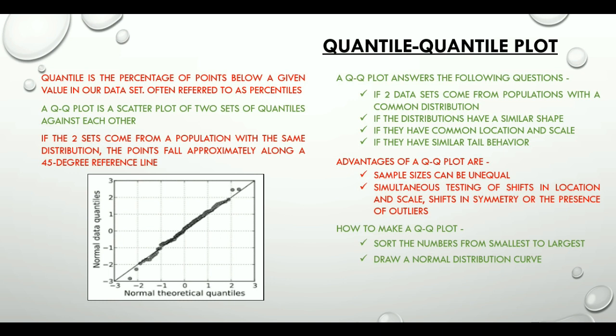Then find the Z value for each segment from the Z table, and finally plot the data set values against the Z values, and that gives us the Q-Q plot.